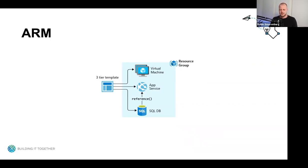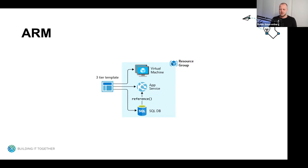ARM templates are written in JSON — JavaScript Object Notation — a lightweight data interchange format that is easy for humans to read and easy for systems to parse and generate. Working with ARM templates, just like using the Azure Resource Manager endpoints, gives you repeatable results. You're able to deploy the same resources in the same way, and they allow you to automate your resource deployment by integrating them with your favorite CI/CD tooling.